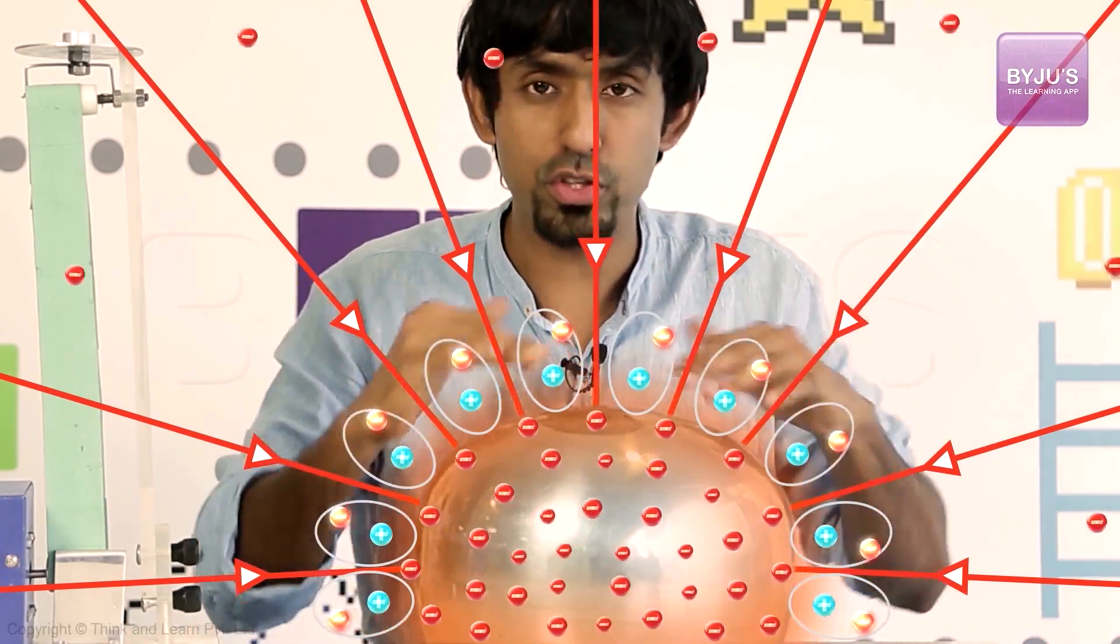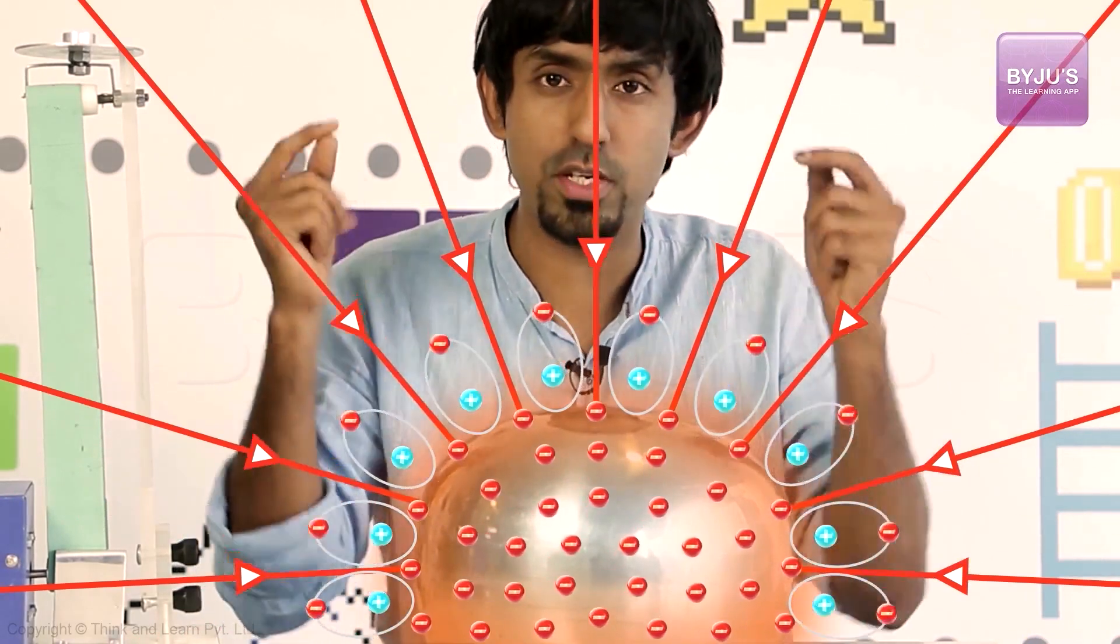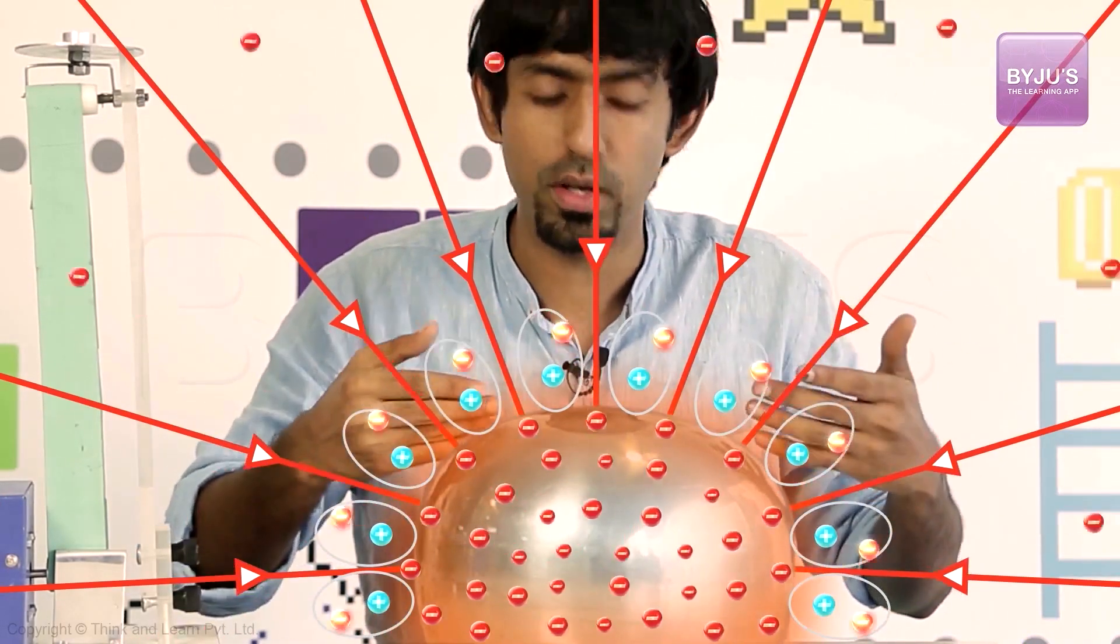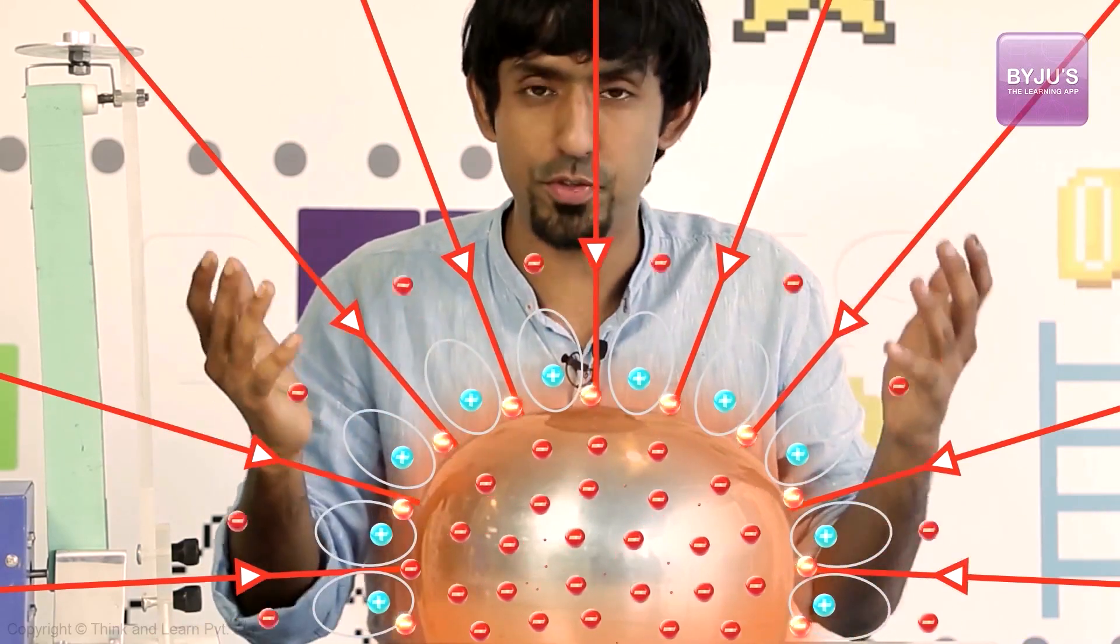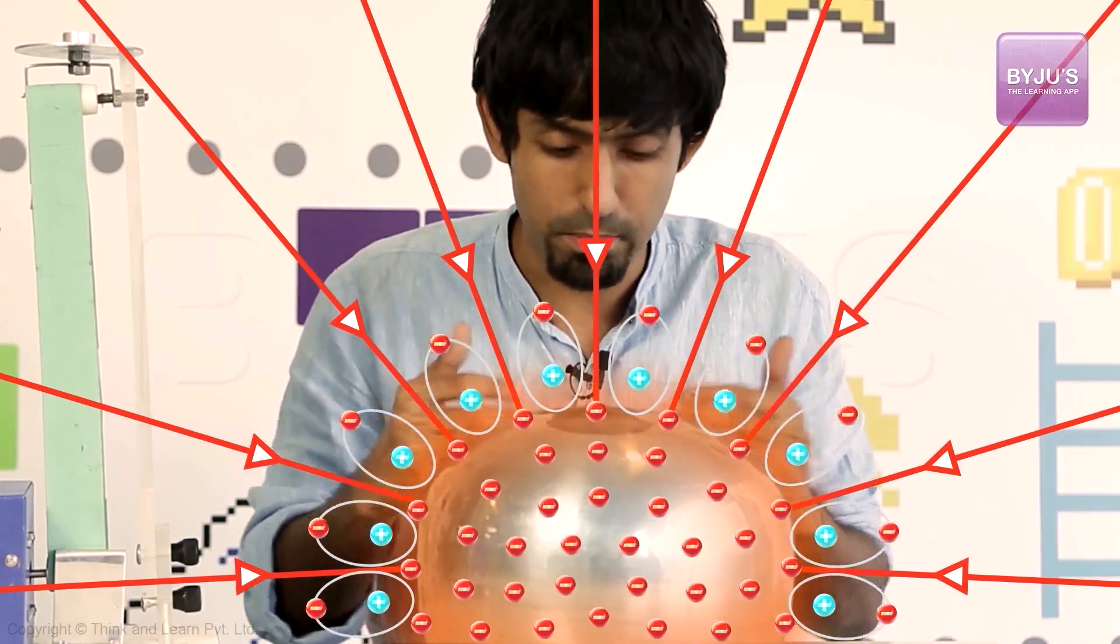And when that happens, you stop, you reach your limit of how much charge you can put, because any more you put, this keeps going into the atmosphere, and the charge density of this metal remains constant after that. It's hit its limit.